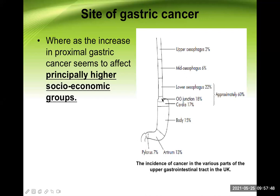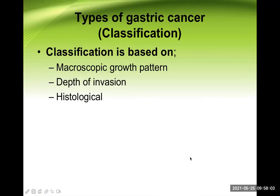Looking at the schematic diagram of the stomach: carcinoma can occur in the antral area, pyloric area, body, cardiac end, and so on. The classification of gastric cancer is based on macroscopic growth pattern, depth of invasion, and histology. Macroscopic means what the surgeon can see with the naked eye through endoscopy — the gross appearance — while histological type refers to the microscopic classification.